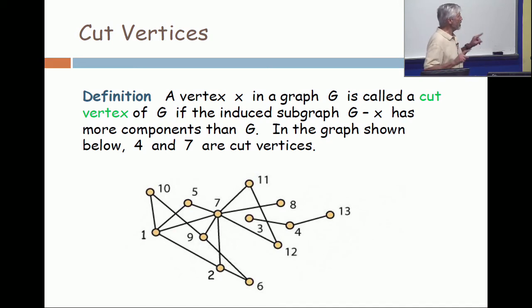And by the way, when you remove vertex 4, what would you call 3 and 13 in what's left? They are one point components. One point components are also called loose points or isolated points.